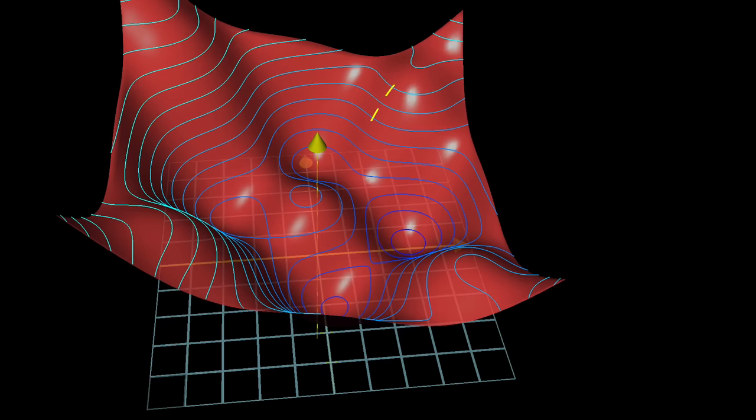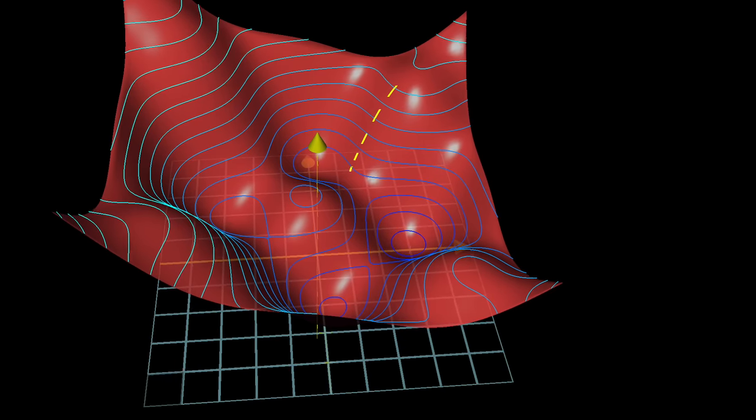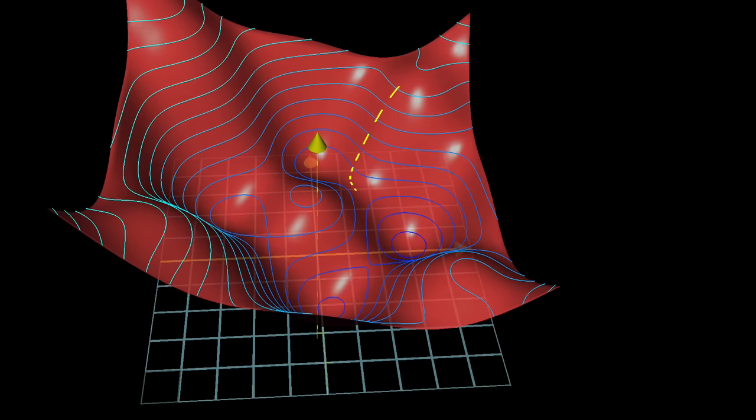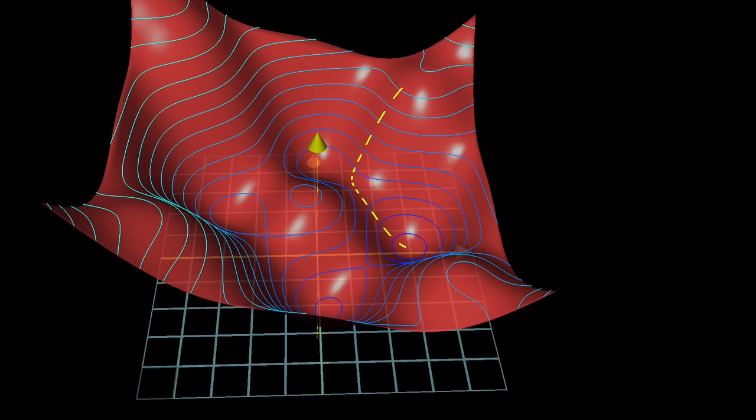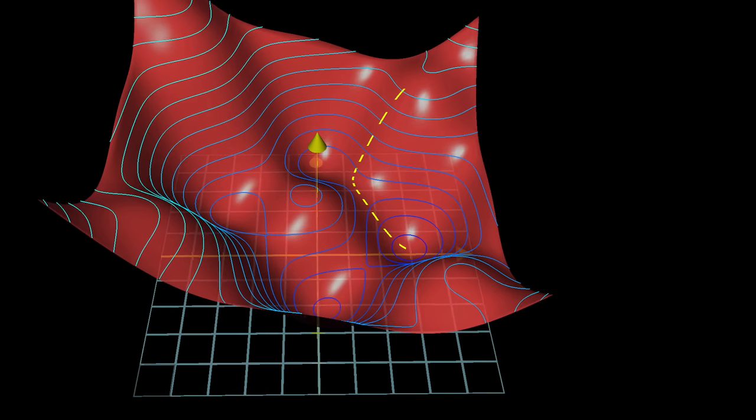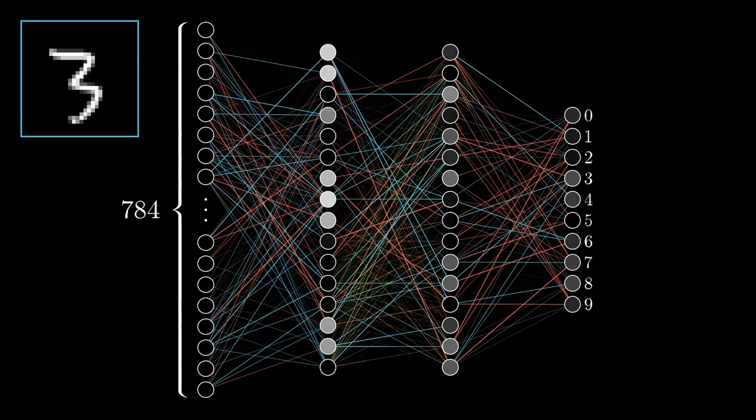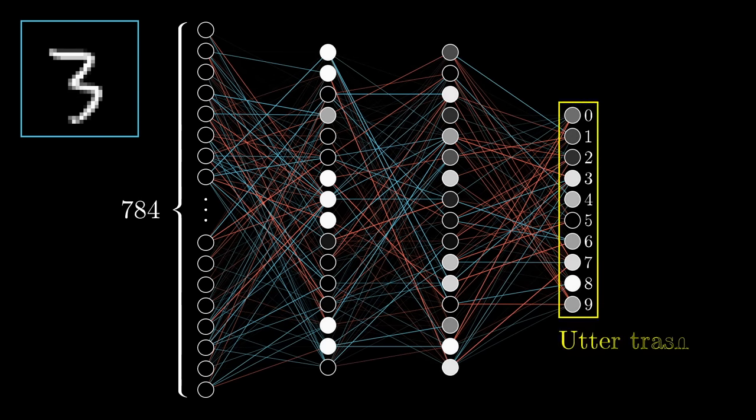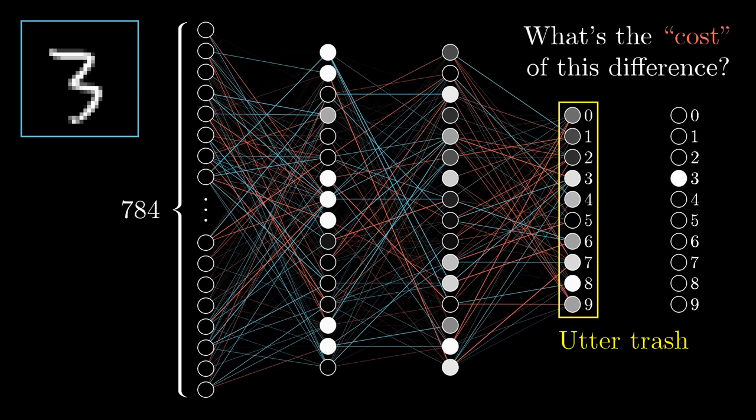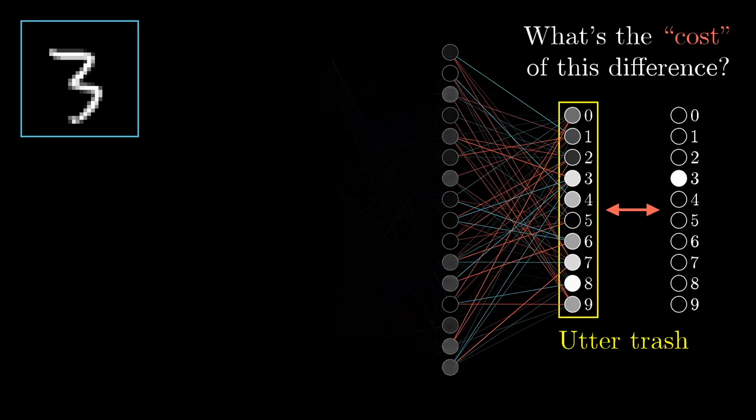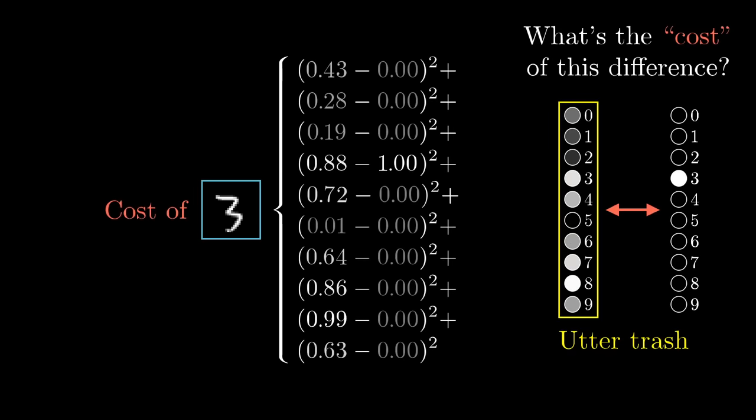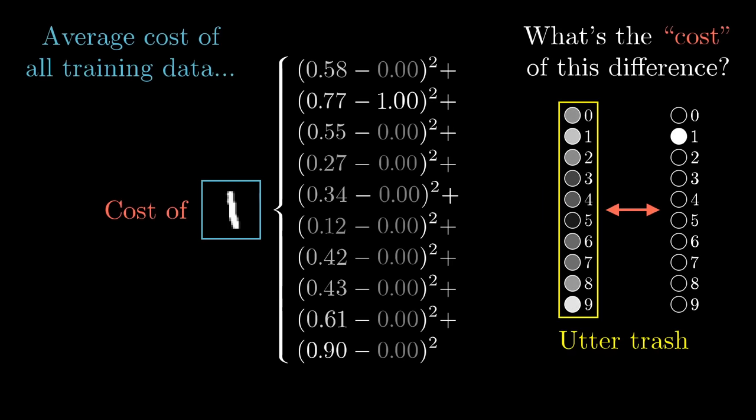I'm also expecting you to understand gradient descent, as described in the last video, and how what we mean by learning is that we want to find which weights and biases minimize a certain cost function. As a quick reminder, for the cost of a single training example, what you do is take the output that the network gives, along with the output that you wanted it to give, and you just add up the squares of the differences between each component. Doing this for all of your tens of thousands of training examples, and averaging the results, this gives you the total cost of the network.